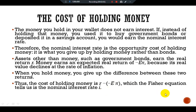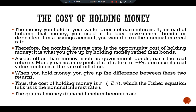The Fisher equation tells us this equals the nominal interest rate i. Just as the quantity of bread demanded depends on the price of bread, the quantity of money demanded depends on the cost of holding money. Hence, the demand for real money balances depends both on the level of income and the nominal interest rate. The general money demand function is written as M/P = L(i, Y). L is used to denote money demand because money is the economy's most liquid asset — the asset most easily used to make transactions.